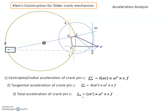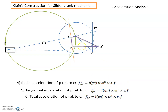The total acceleration of C relative to O: F_C(CO) equals the length of vector O'C multiplied by omega squared and the scale factor. For the connecting rod PC, we determine the acceleration of P relative to C, which again has two components. The centripetal component of P relative to C, indicated by F_C(PC), equals the length of vector QC multiplied by omega squared and the scale factor. QC is perpendicular to the connecting rod.